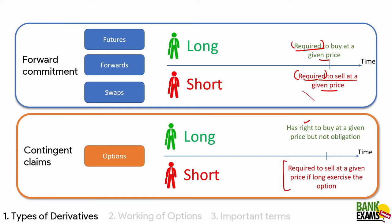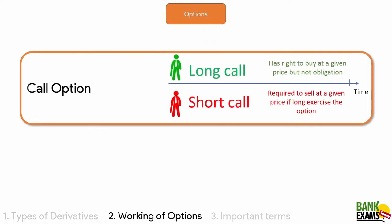The long has a right to buy at a given price but not the obligation — that is, the long has the option to buy but not the obligation — because the long has already paid a premium for that treatment. The short is required to sell at a given price because the short received a premium from the long. That is the long call and short call: long has the right to buy; short is required to sell if long exercises the option. If long doesn't exercise, the option expires and the short keeps the premium as profit.